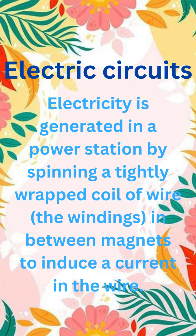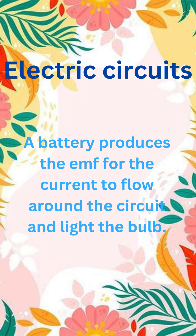Electricity is generated in a power station by spinning a tightly wrapped coil of wire, the windings, in between magnets to induce a current in the wire. A battery produces the EMF for the current to flow around the circuit and light the bulb.